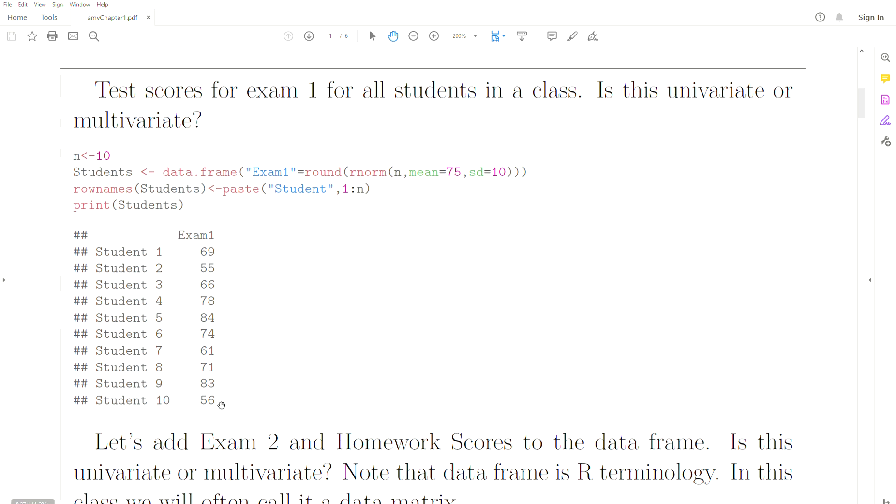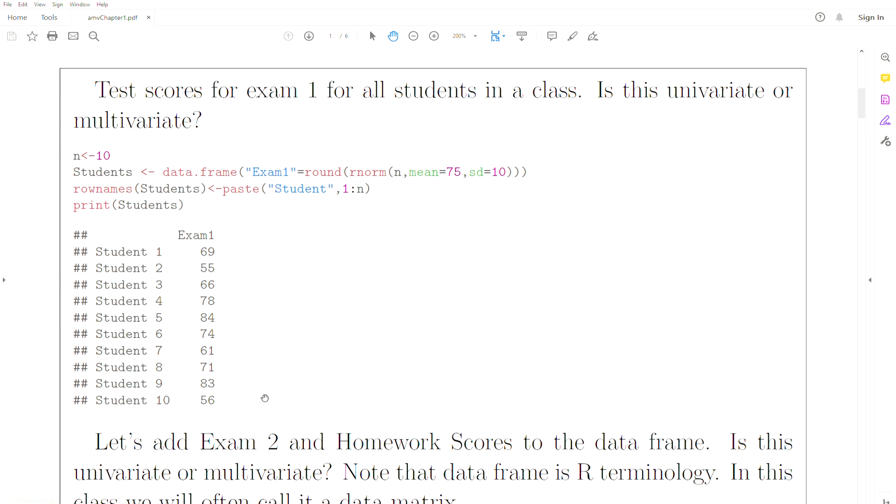So here we have exam one for 10 students. And the question is, is this univariate or multivariate? And the answer is it's univariate, because we have one response variable per subject.